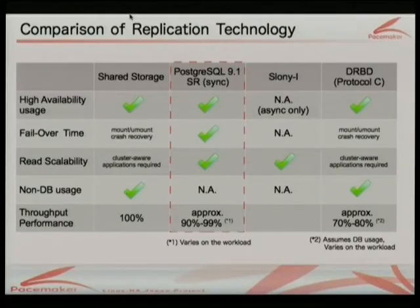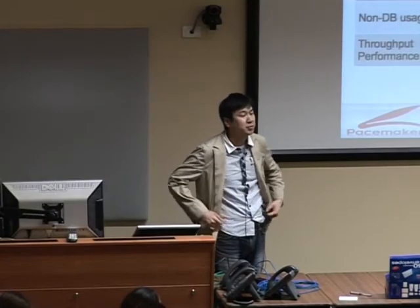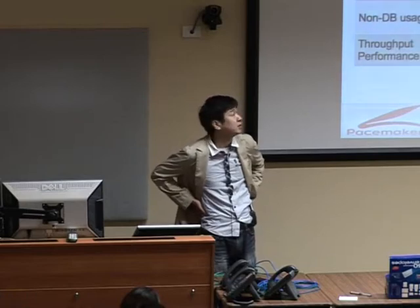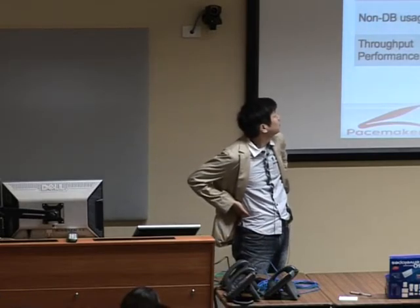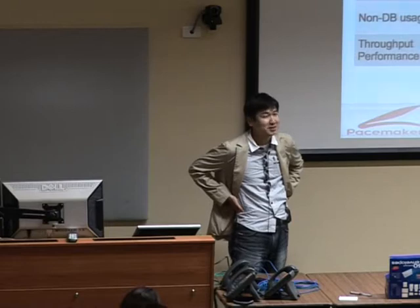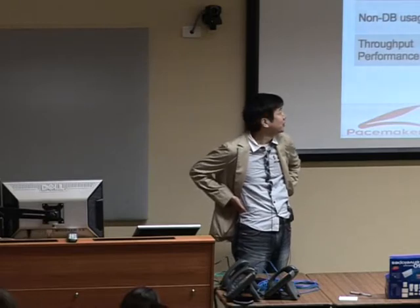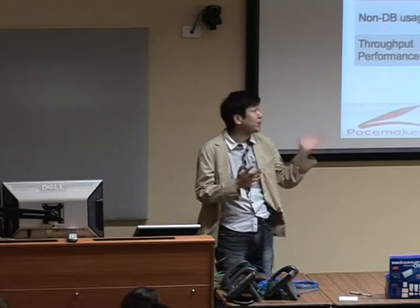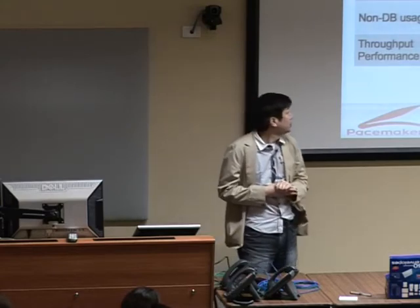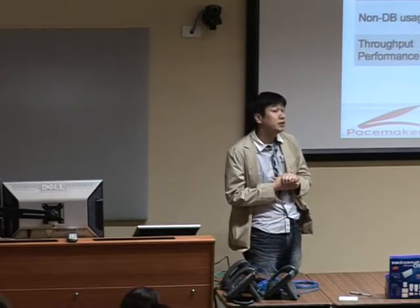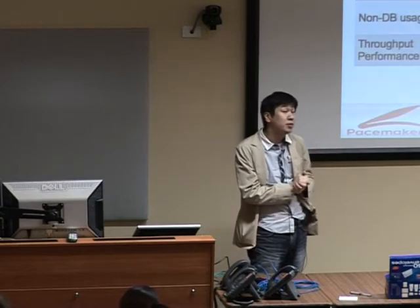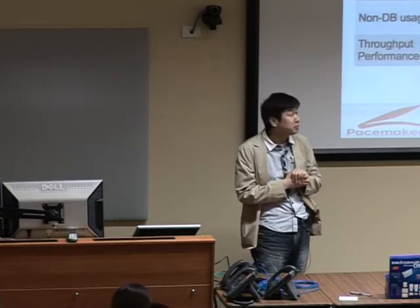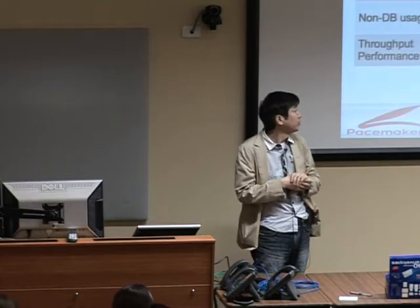Here is a simple comparison with other solutions. Slony only supports asynchronous replication, so it's not suitable for HA clusters. If you want to replicate data other than a database, DRBD is a very good solution. In terms of performance, PostgreSQL streaming replication is optimized for database use, so performance is good — the overhead should be less than 10 percent.